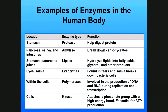Lysozymes are structural things, but there are enzymes that break down bacterial cells through our saliva and tears. Within the cell, we have polymerases that polymerize — that is, put little things together into bigger molecules. A DNA polymerase puts DNA together and an RNA polymerase puts RNA together. Kinases are very special: they attach phosphate groups with a high-energy bond, which is very important for ATP production — our energy currency.